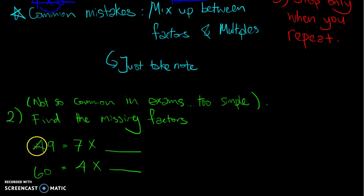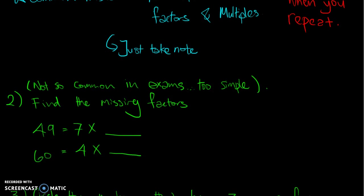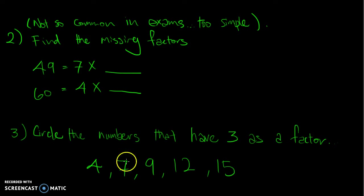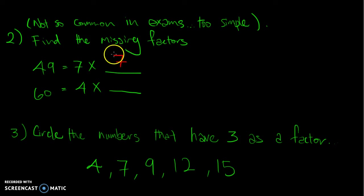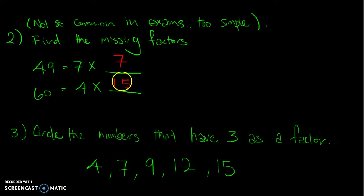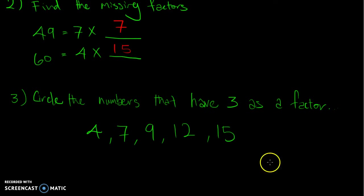Quickly covering some simpler questions — not likely in exams but easy to solve. 'Find the missing factor': for 49, since 7 × 1 is obvious, 49 ÷ 7 = 7, so the missing factor is 7. For 60 with one factor given as 4: 60 ÷ 4 = 15, so 4 and 15 are factors of 60 and the missing factor is 15.